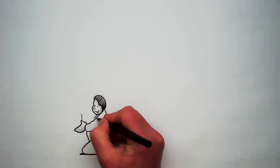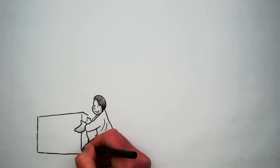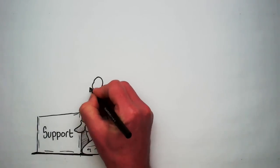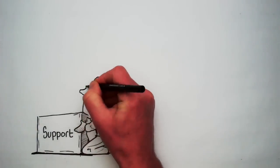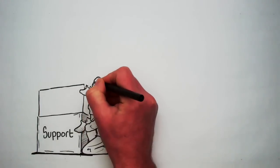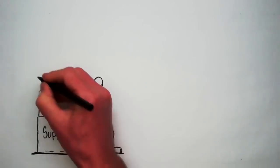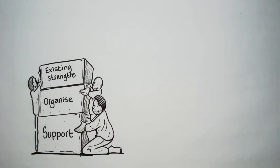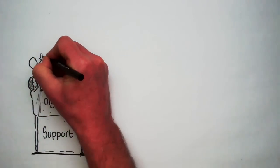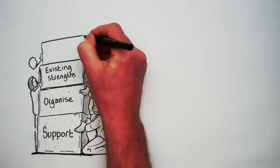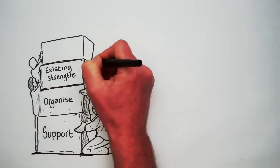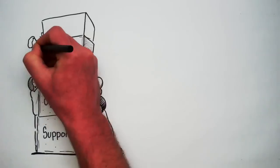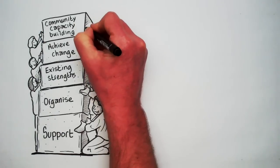Many communities, particularly those that face disadvantage, look for support to help increase their capacity — support that helps them to organise and to build on their existing strengths. The aim is to provide support so that communities are better able to achieve change. This support is called community capacity building.